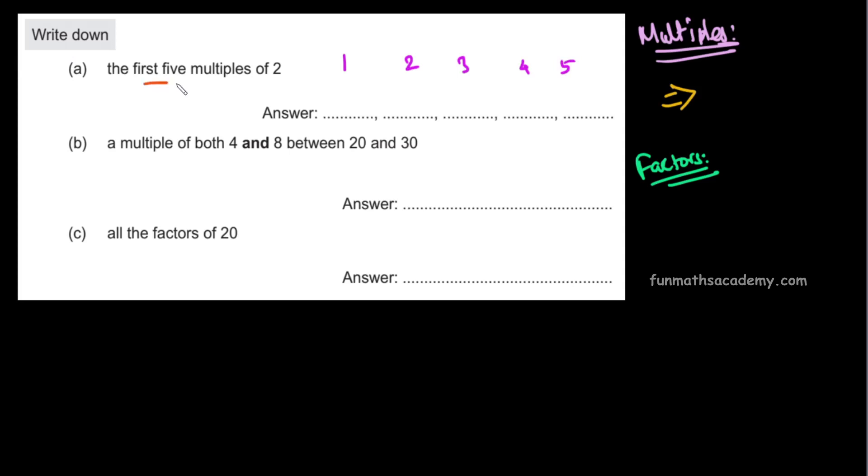First 5 multiples of 2: If you multiply 2 by your natural numbers, you get 2×1=2, 2×2=4, 2×3=6, 2×4=8, 2×5=10.